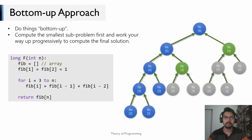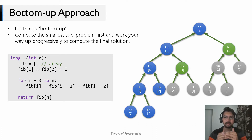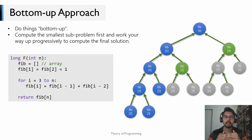The bottom-up approach is another way to write dynamic programming algorithms. As the name suggests, you do things bottom-up — by 'bottom' we mean the smallest sub-problem and by 'up' we mean the original problem. So you start by solving the smallest sub-problem and keep solving progressively larger sub-problems until you reach the original solution.